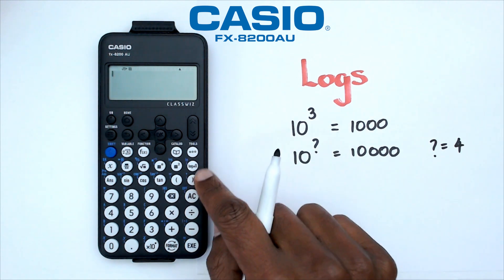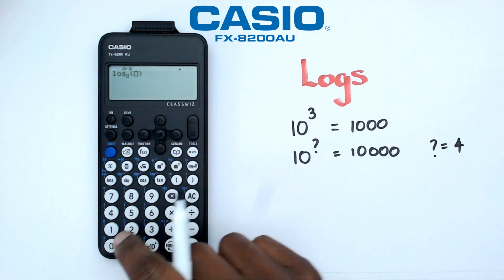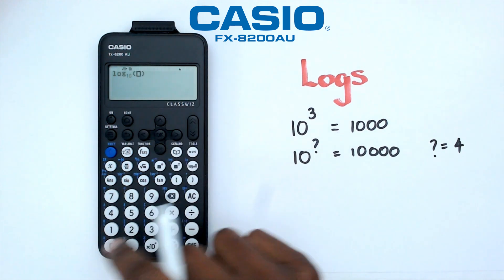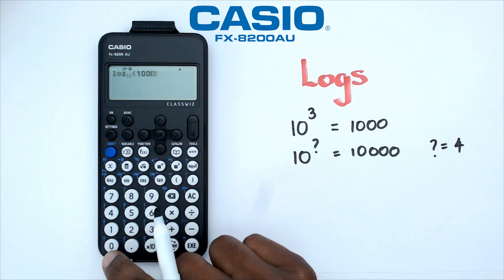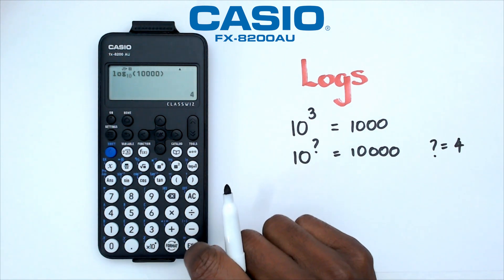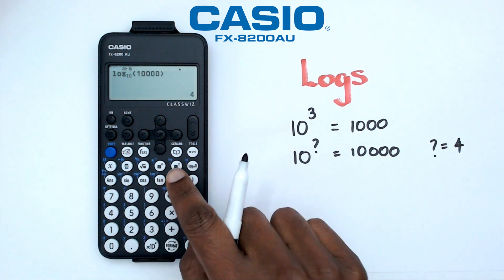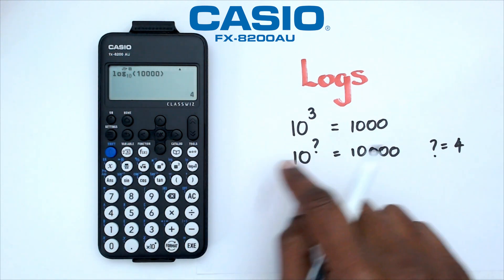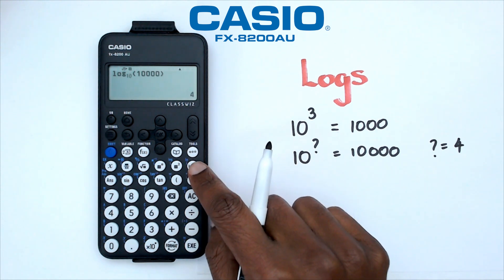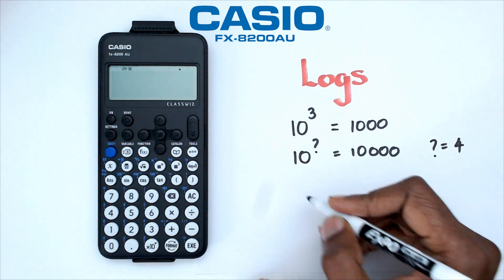Let me show you how to do it with the other button. If I press Log, I put the base as 10 and the number as 10,000, I get 4. So you only use the simple log button if it's base 10, but you'd use the log button with the two boxes if it's a different base.